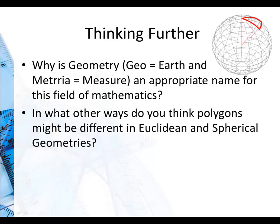Thinking further, why do you think geometry is an appropriate name for this field of mathematics? Geo comes from the word Earth, and metria comes from the word measure. And in what other ways do you think polygons might be different in Euclidean and spherical geometries? I will not give you the answers here. This is something for you to ponder.